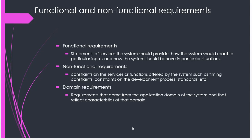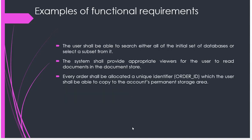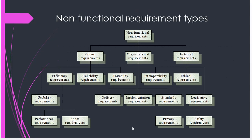An example of a functional requirement: 'The user shall be able to search either any or all of the initial set of databases.' The user wants to search — that's a function the system should have. Another example: 'The system shall provide appropriate viewers for the user to read documents in the document store.' And: 'Every order shall be allocated a unique identifier which the user will be able to copy to the accounts permanent storage area.' These are functional requirements that the user is actually going to use.